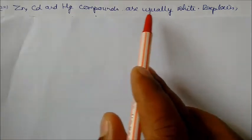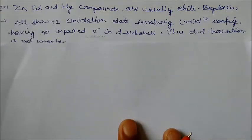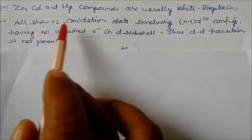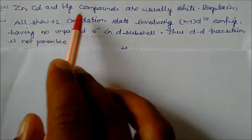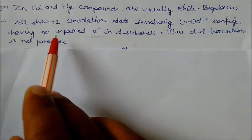Zinc, cadmium and mercury compounds are usually white. Explain. Because all these elements show +2 oxidation states involving n-1 d10 configuration. They do not have any unpaired electron in the d subshell. That's why there is no d-d transition present.